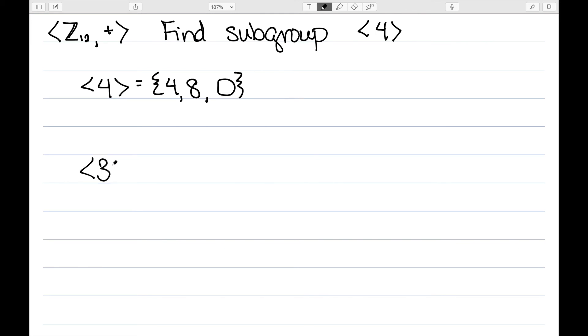Let's also consider the subgroup generated by 3. This one would start with 3. 3 plus 3 is 6, plus 3 is 9, plus 3 is 12, divided by 12 has a remainder of 0. So I would have all of the multiples of 3.